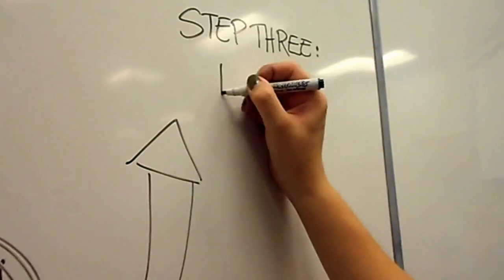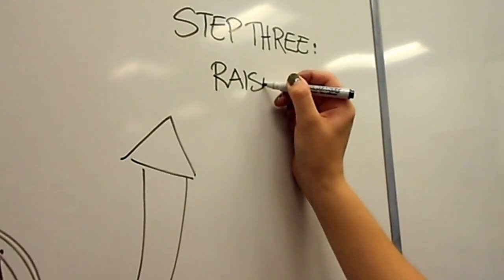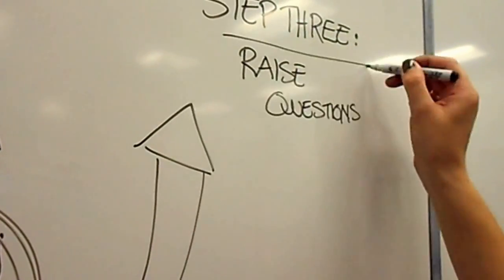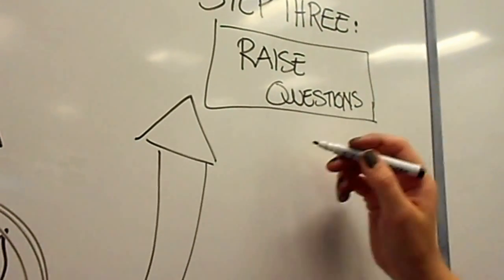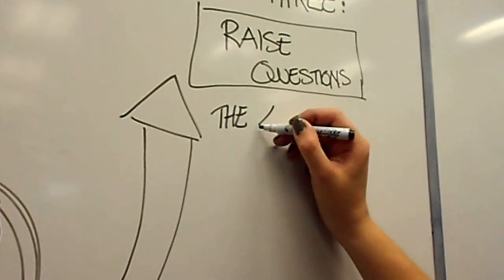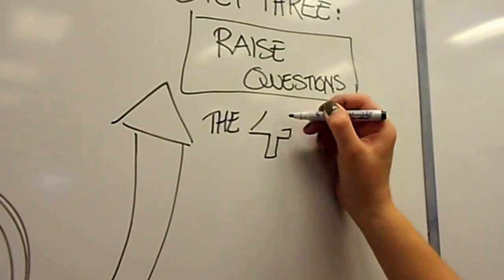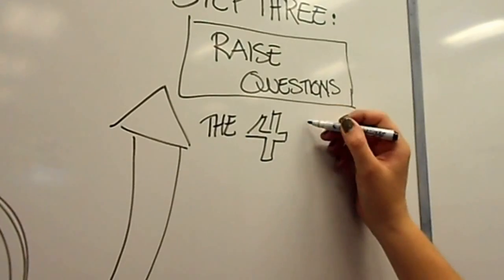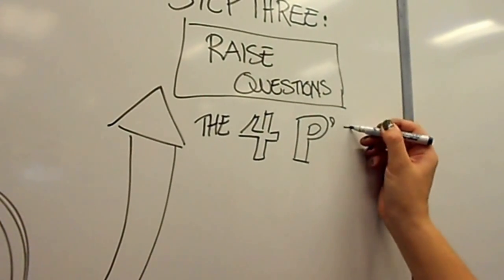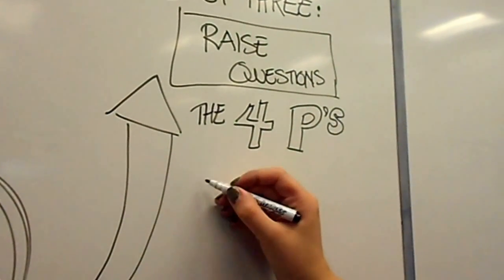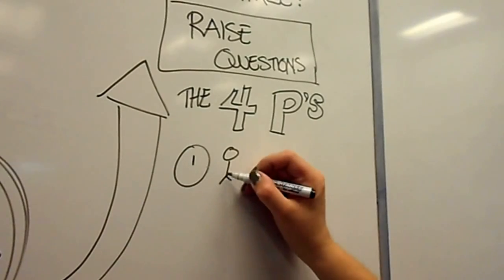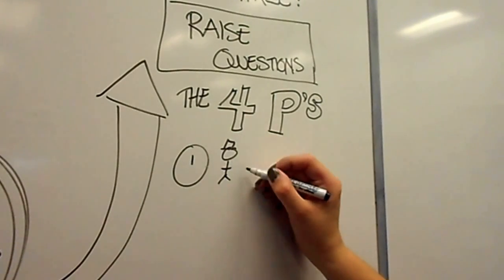Now that we have identified a topic, we can develop our research problem by looking at the four P's. This will help us raise questions. The first P stands for people — who does it affect? This would be the study population.